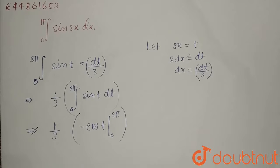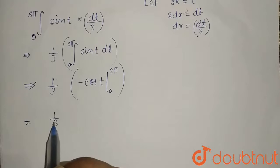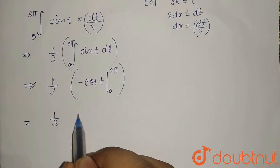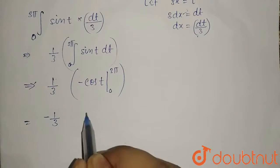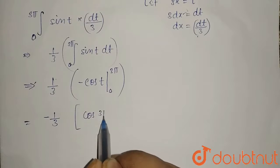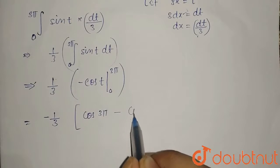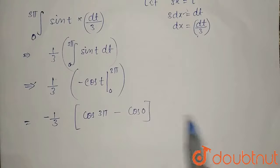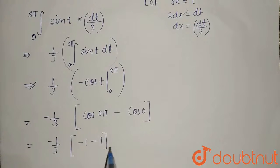Evaluating this, we get 1 over 3 times the quantity minus cos 3pi minus minus cos 0, which equals 1 over 3 times 2, giving us 2 over 3.